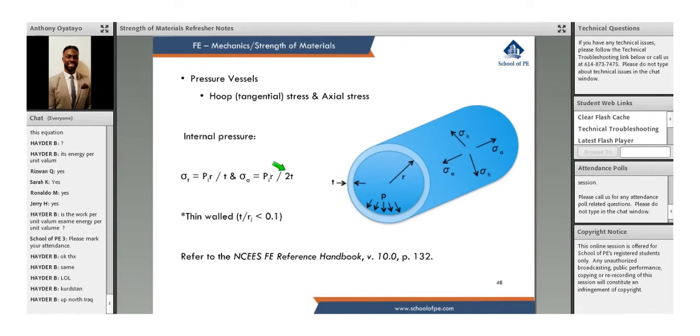And then here it's divided by two times the thickness. So what we typically look at when we're dealing with these problems is, are we dealing with a thin walled cylinder or a thick walled? So if it's a thin walled cylinder, that would basically mean that your thickness divided by the inner radius is less than 0.1.